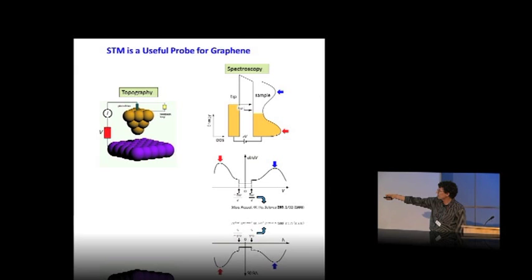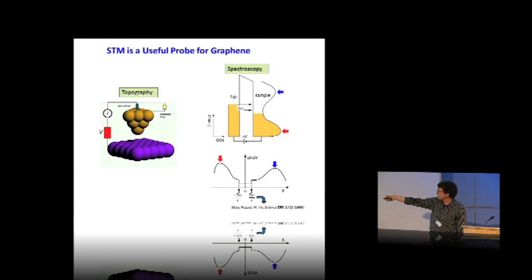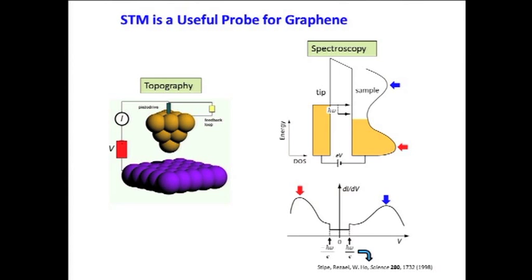By varying the voltage and measuring the differential conductivity of the STM tunnel junction, you can measure what we refer to as dI/dV. By measuring that as a function of the voltage between the tip and the sample, we can measure the energy dependence of the local density of states beneath the STM tip. V equals zero is the Fermi level; these are filled states, and these are empty states.